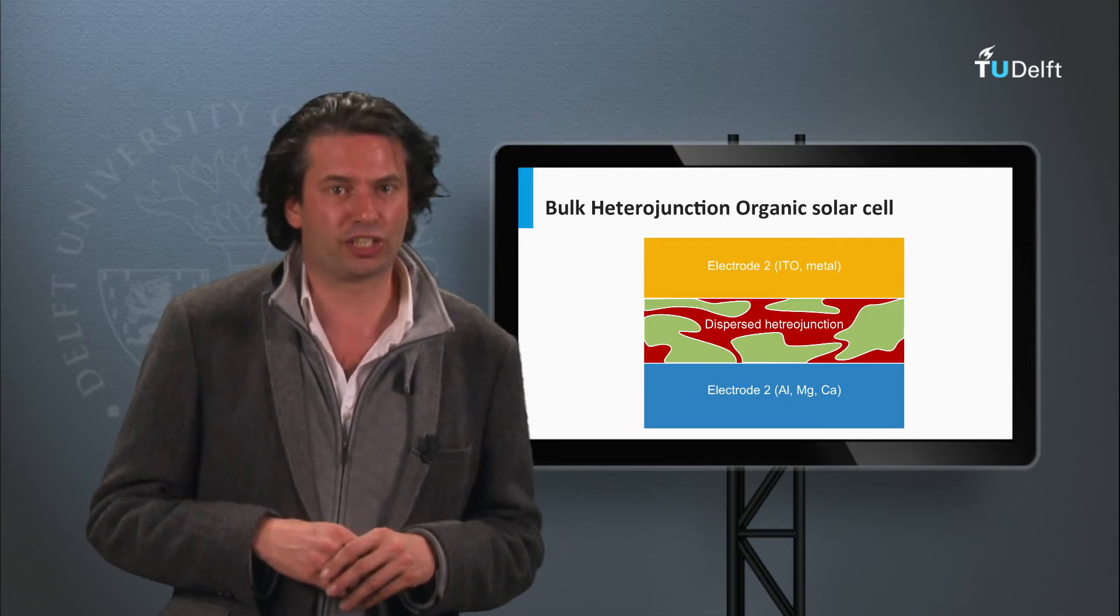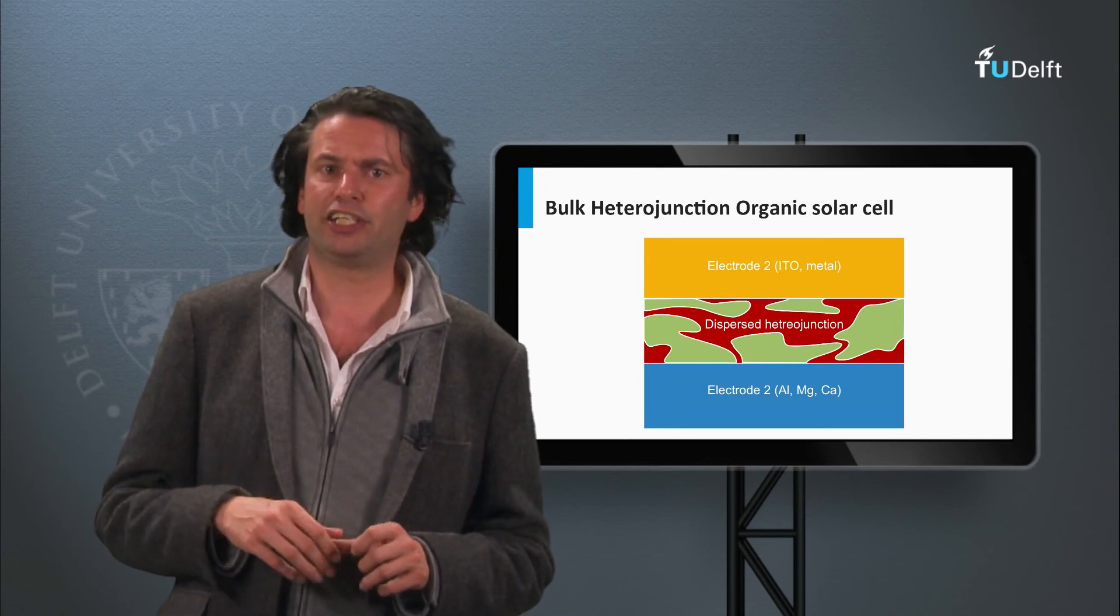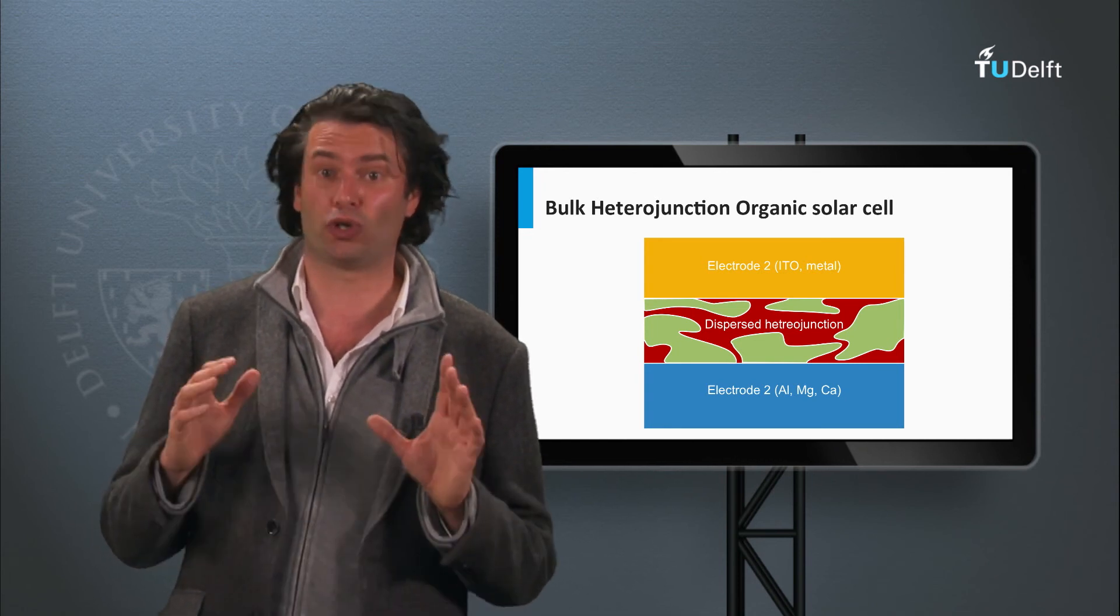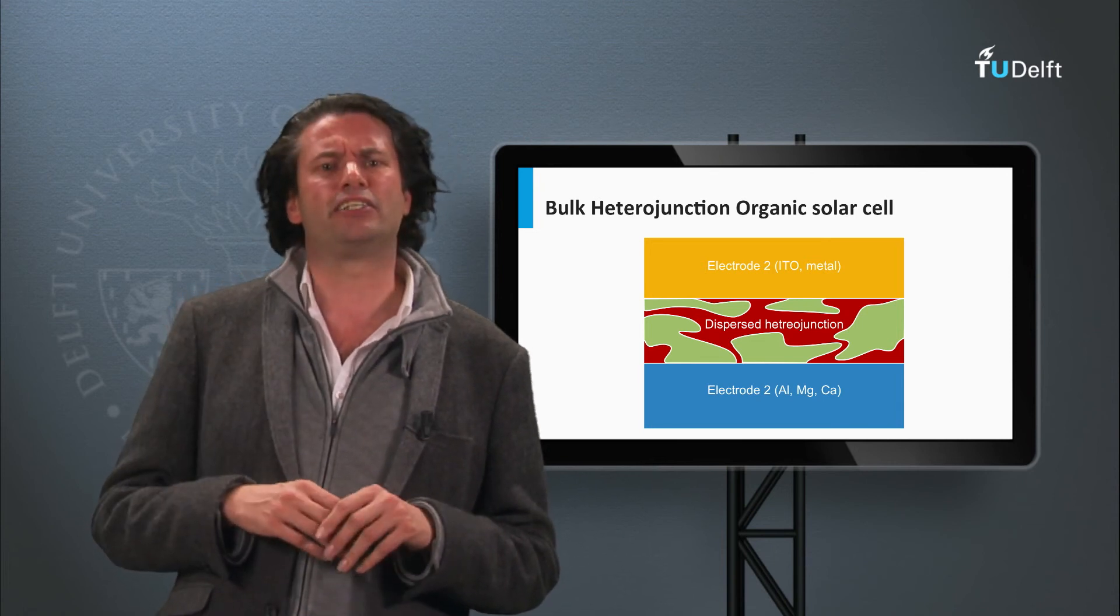The record organic solar cells are based on double junctions nowadays. Heliatek achieved a 12.0% solar cell efficiency on lab scale. The stability of these cells is unknown.